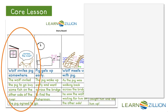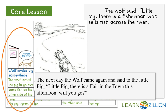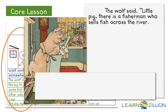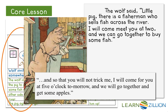When the wolf invites the pig to the fair, he says, 'Little pig, there is a fair in the town this afternoon. Will you go?' Maybe I can write: 'The wolf said, Little pig, there is a fisherman who sells fish across the river.' But then I want the wolf to say that he'll meet the pig at 2, since the wolf is always trying to meet the pig a little earlier. I have an idea from another part of the original text where the wolf says, 'I will come for you at 5 o'clock tomorrow, and we will go together and get some apples.' So maybe I can write, 'I will come to meet you at 2, and we can go together to buy some fish.' I also want to make sure I include the detail from my storyboard about the pig agreeing to go with the wolf. The pig agreed to go with the wolf to buy fish.